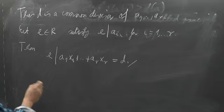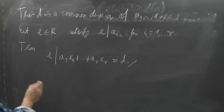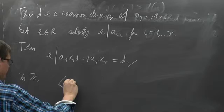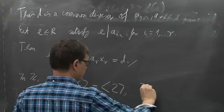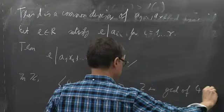For instance in Z, the ideal generated by 4 and 6 is the same as the ideal generated by 2, and 2 is the greatest common divisor of 4 and 6.